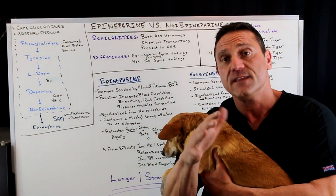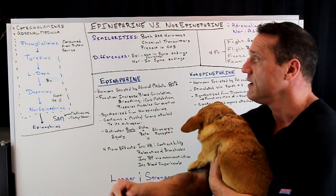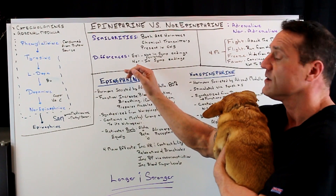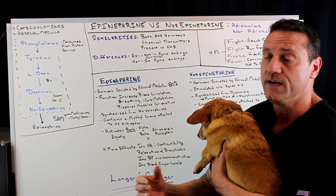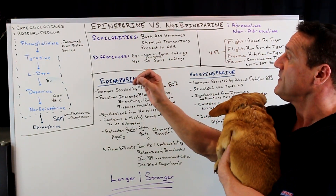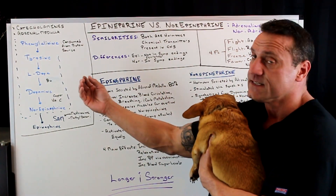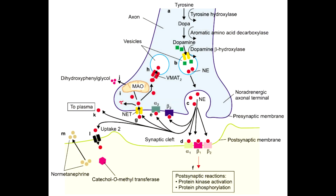The main difference between the two is that noradrenaline — norepinephrine — is secreted in the sympathetic nerve endings, whereas epinephrine is not.